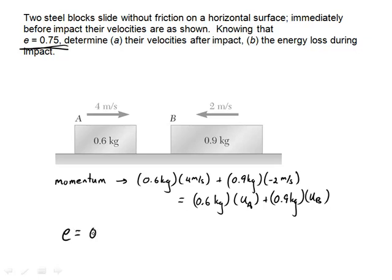But what you'll notice here is I have two unknowns, u_a and u_b. So I need another equation. That equation comes from the coefficient of restitution. E, which is equal to 0.75, must equal u_b minus u_a over v_a, which is 4 meters per second, minus negative 2 meters per second, which is u_b minus u_a over 6 meters per second. And so now I have two equations and two unknowns.